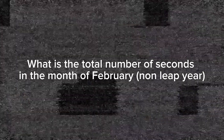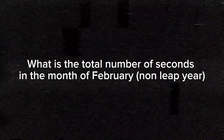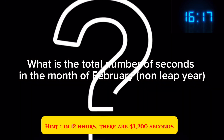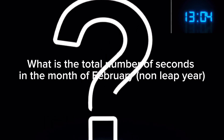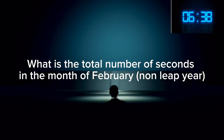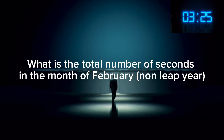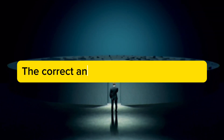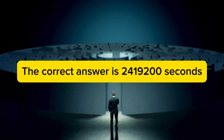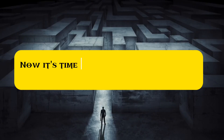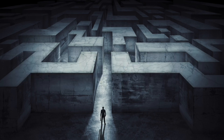Level 5: What is the total number of seconds in the month of February (non-leap year)? Your time starts now. Hint: in 12 hours there are 43,200 seconds. Hurry up, time is running out. Three, two, one — time is up. The correct answer is 2,419,200 seconds. Congratulations, you have crossed level five.